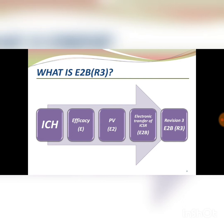I have received a few queries to explain about the granularity of the data that we capture in R3. I'm going to give three simple examples of how the data is more granular in R3. The first example is seriousness. In R2, if you want to mention seriousness, you can only do it at the case level. For example, if you have three events in a case where event one is serious and events two and three are non-serious, when you generate the E2B R2 draft you can see seriousness only at case level, not at event level. This makes it very difficult to distinguish the seriousness of individual events — you have to read the complete narrative to understand which events are serious and which are non-serious.